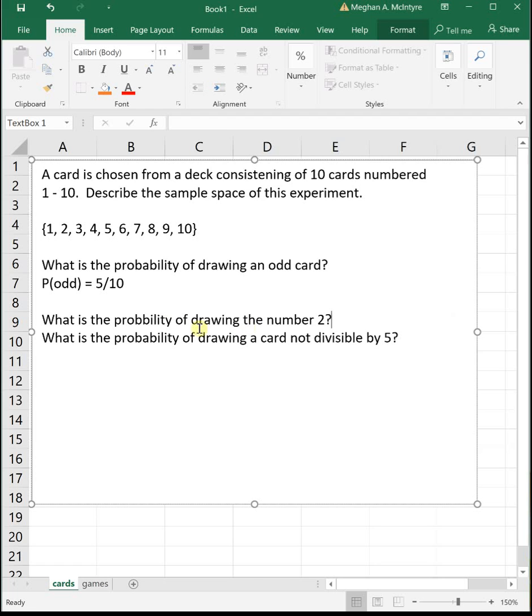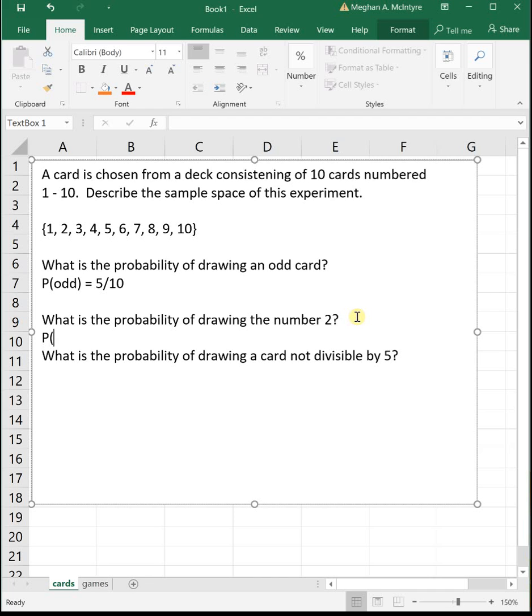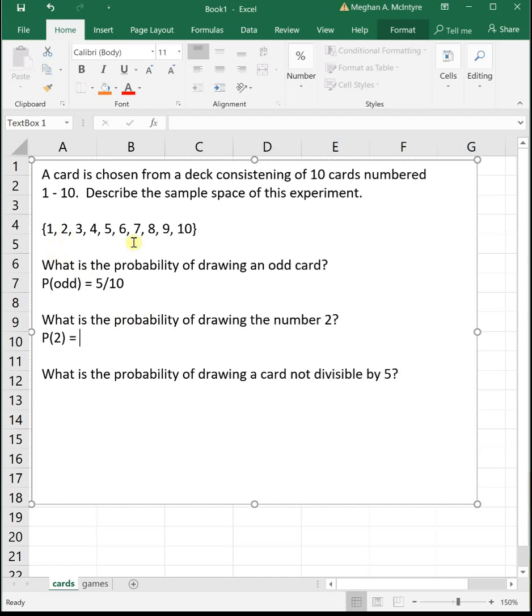Alright, next one. What is the probability of drawing the number 2? So we're trying to find the probability of drawing the number 2. Well, there is one card in the deck with the number 2 on it, so there's just one way to do it, and then we've got 10 possibilities. So the probability of drawing the number 2 is 1 out of 10.